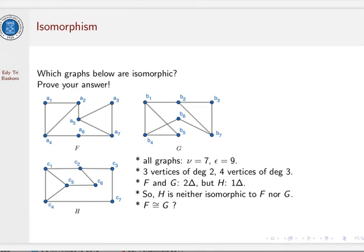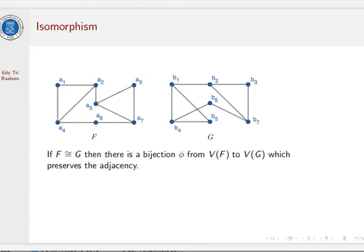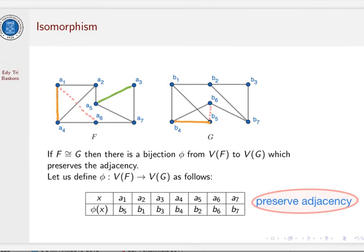What about F and G? Are they isomorphic? Let's have a look. If F is isomorphic to G, then there is a bijection φ from V(F) to V(G) which preserves the adjacency.